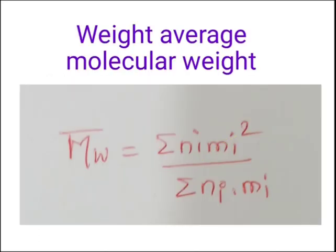Now, the definition of weight average molecular weight. The weight average molecular weight is represented by Mw, which equals (ΣNi·Mi²) / (ΣNi·Mi). This is the formula to calculate the weight average molecular weight.